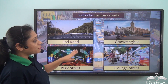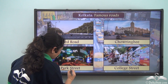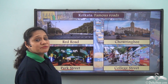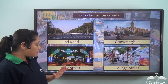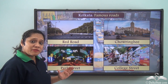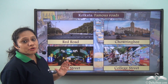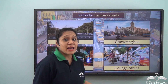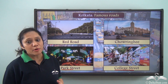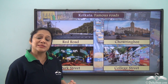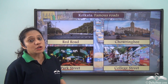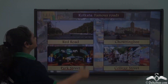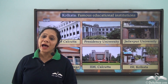Some of Kolkata's very famous roads are the Red Road, Chowringhee, Park Street, and College Street. Park Street is beautifully decorated during Christmas and New Year. College Street has rows and rows of bookshops — if you are looking for old or rare books, you can be sure to find them here.